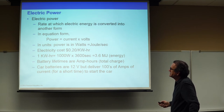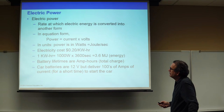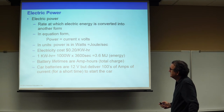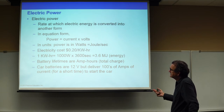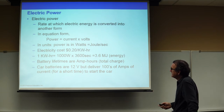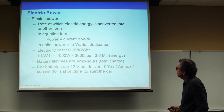If a battery was rated at 10 amp-hours, for example, that means I could run it at 10 amps for one hour, or at 100 amps for a tenth of an hour, which would be about six minutes. The product tells me how long the battery will last.